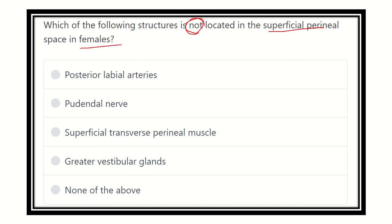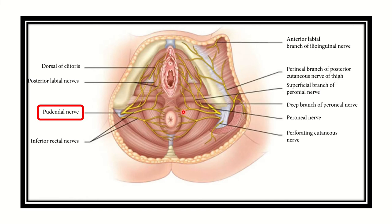The options are: posterior labial arteries, pudendal nerve, superficial transverse perineal muscle, greater vestibular gland, and none of the above. First of all, let's look at the superficial perineal space.